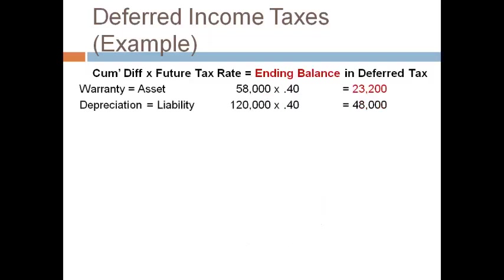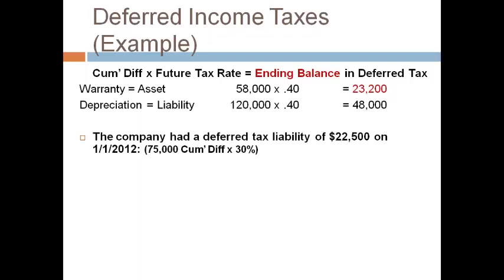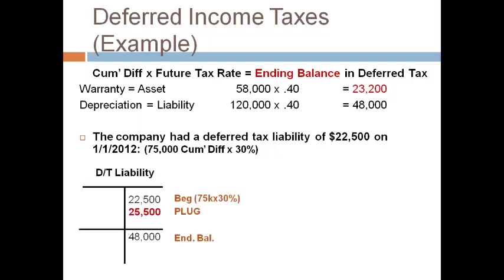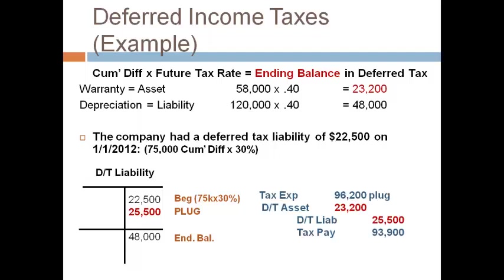The cumulative differences are multiplied by the future tax rate to get the balance in the deferred tax account for the asset and the liability. The deferred tax liability had a beginning balance of $22,500. It takes recording a credit of $25,500 to get to the ending balance of $48,000. It is important to note that the amount recorded in the journal entry is the amount it takes to get to the calculated ending balance. The deferred tax asset account had a beginning balance of zero, so it takes recording a debit of $23,200 to get to the balance of $23,200. The tax payable is recorded for the amount at the bottom of the tax column, which was $93,900. Tax expense will not equal the $90,000 at the bottom of the book column because we have a tax rate change. Tax expense is recorded for the amount required to balance the journal entry. The increase in the tax rate caused tax expense to be slightly higher.